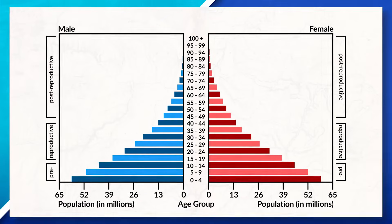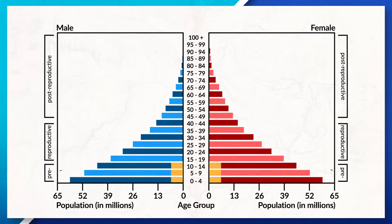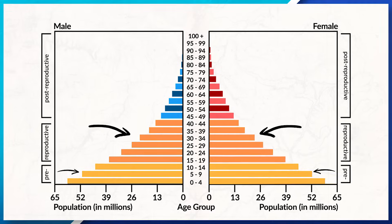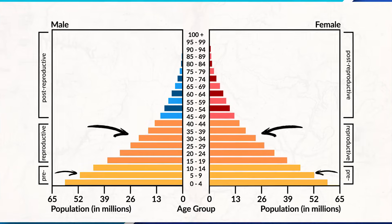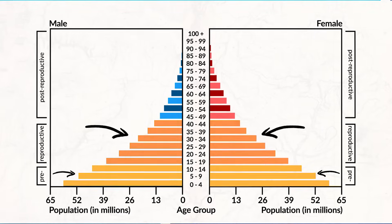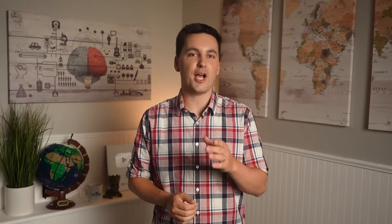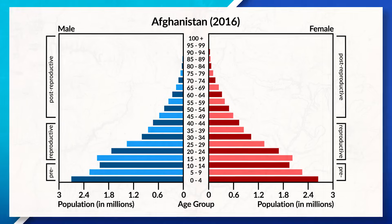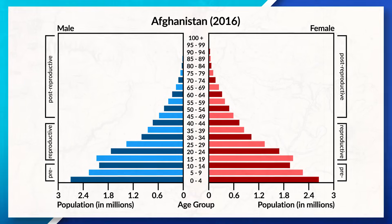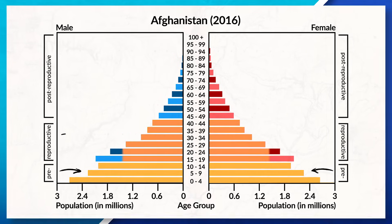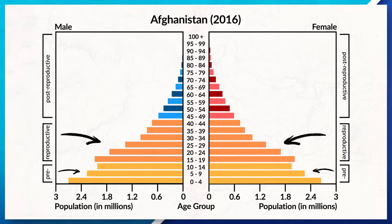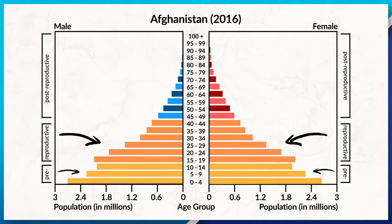Understanding these categories can tell us a lot about the current state of a society and help us predict the future. For example, if the majority of a population is currently in the pre-reproductive or reproductive years, we can predict that the society's population is going to grow at a much faster rate. We can see this when looking at Afghanistan's population pyramid — notice how a large percentage of Afghanistan's population is near the bottom, in the pre-reproductive and reproductive years, showing growth and indicating that many people could be having more kids soon.